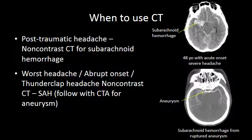CT is certainly the workhorse in the setting of trauma. A non-contrast CT has very high sensitivity and specificity for subarachnoid hemorrhage, so in patients with trauma we want to detect blood in the brain — whether that is subarachnoid hemorrhage or epidural or subdural hemorrhage. A non-contrast CT is the modality of choice.